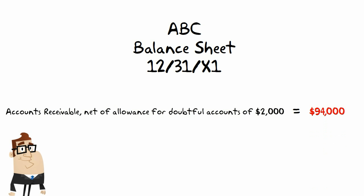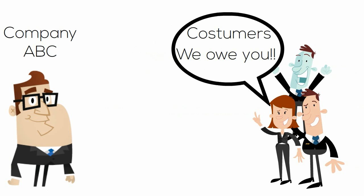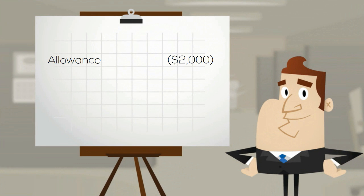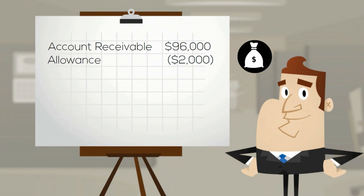What does this $94,000 asset really represent if it is net of allowance for doubtful accounts of $2,000? What it means is that although the company's customers owe it a gross accounts receivable amount of $96,000, management estimates that $2,000 of that amount is doubtful and has allowed for $2,000 of potential bad debts. This estimated amount is then deducted from $96,000 to reflect what management believes it will ultimately collect in cash, which is only $94,000.